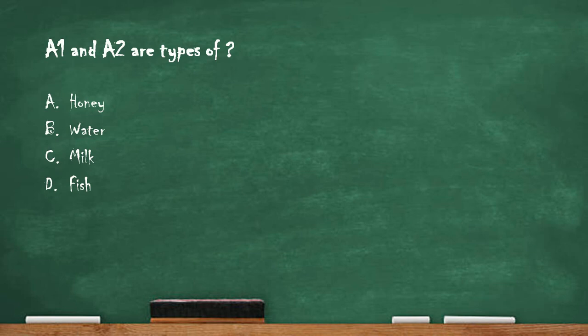Next question: A1 and A2 are types of — option A: honey. Option B: water. Option C: milk. Option D: fish. The right answer is option C — milk. A1 and A2 are types of milk.